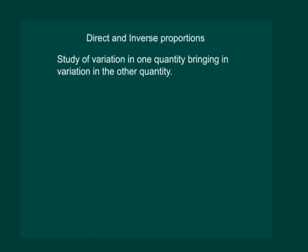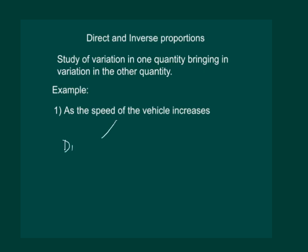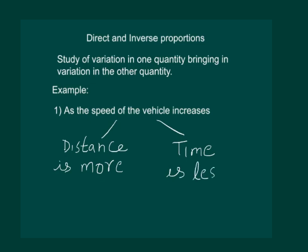Let us see what will happen if the speed of the vehicle increases. We will observe that distance travelled would be more if the speed increases, while time taken will be less. So that would mean that if speed is increasing, it is affecting distance covered and time taken. And that would come to our concept of direct and inverse proportions.